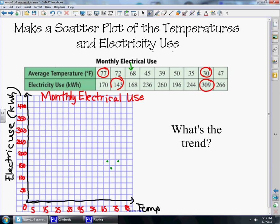When the temperature's 45, right on the line, we use 236 kilowatts, about halfway between 225 and 250. Then we have 39 degrees, just about 40, and 260 kilowatts. And then we have 50 degrees and 196 kilowatts, which is just about 200.